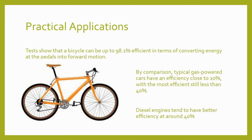Tests show that a bicycle can be up to 98.1% efficient in terms of converting energy at the pedals into forward motion. By comparison, typical gas-powered cars have an efficiency close to 20%, with the most efficient still less than 40%, while diesel engines tend to have a better efficiency at around 40%.